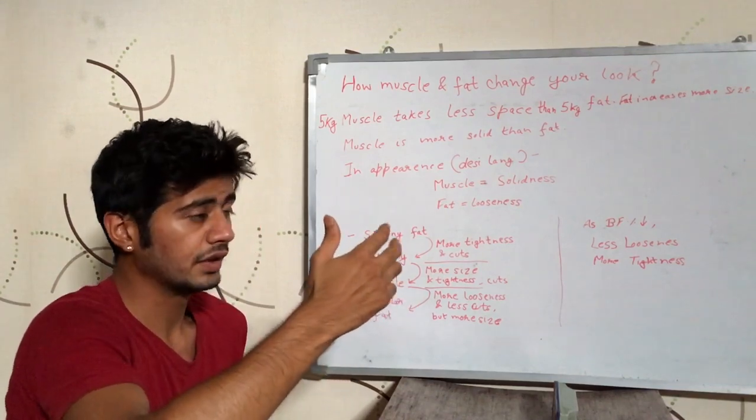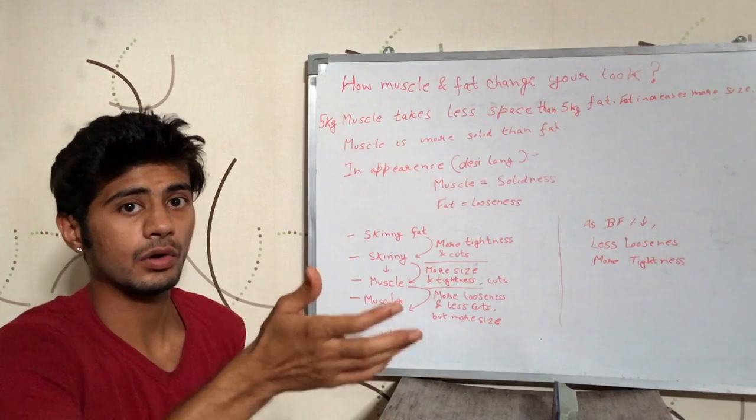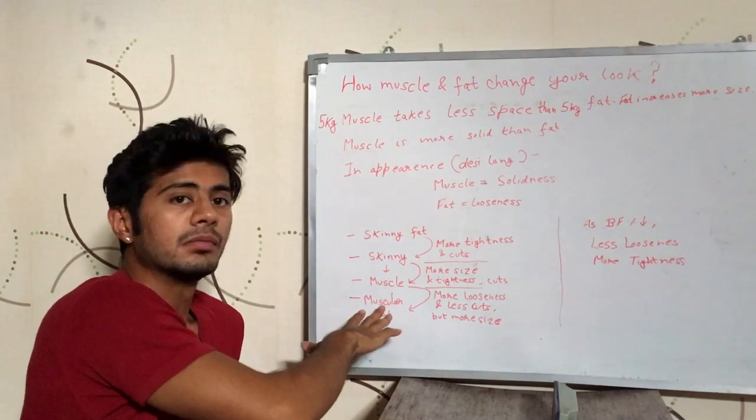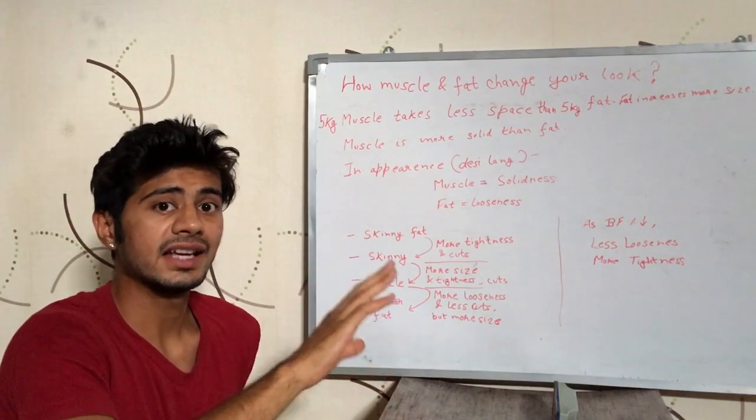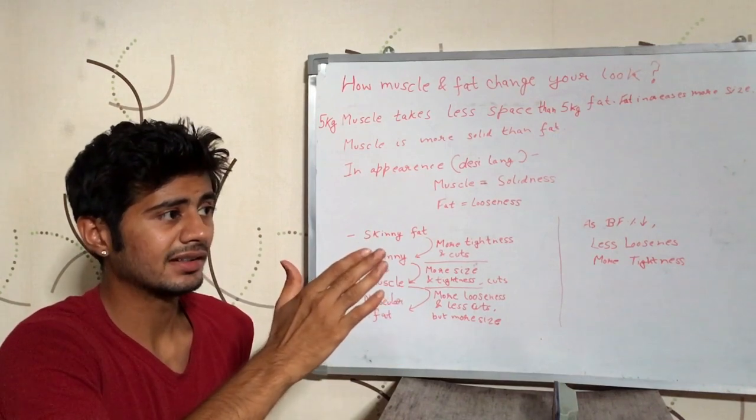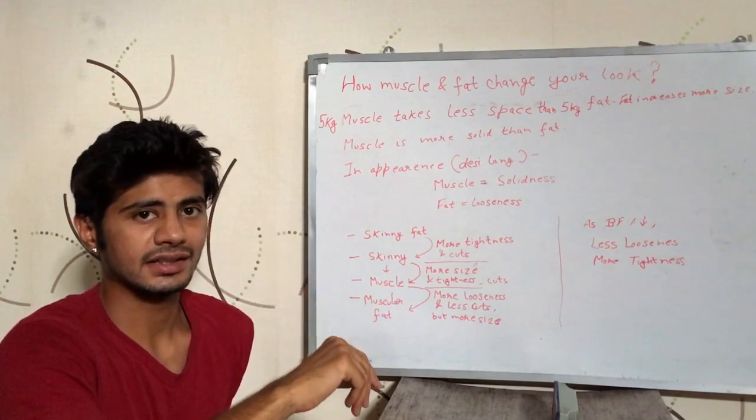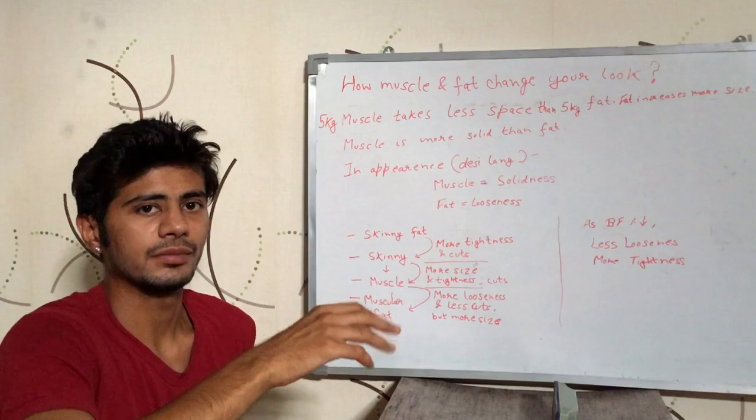Now if this guy with all that muscle, he gains more fat on top of that, now this guy will be like muscular fat. So obviously his size will increase as he has gained fat but his body will start to look a bit loose even if he has that size because he has gained that fat on top of that muscle.